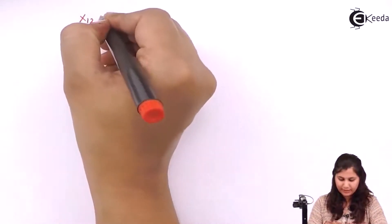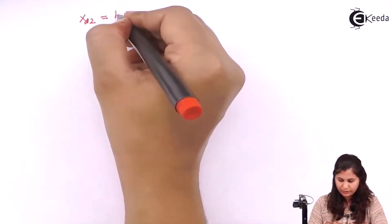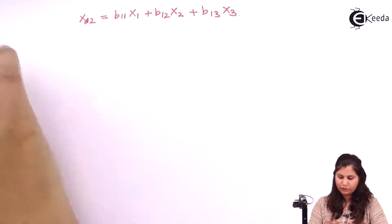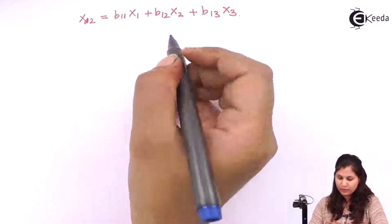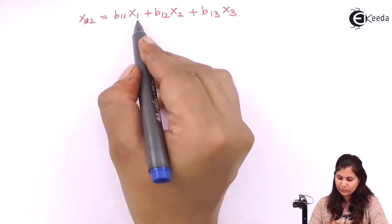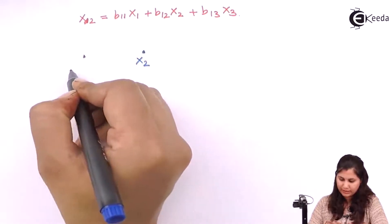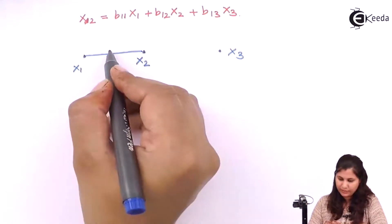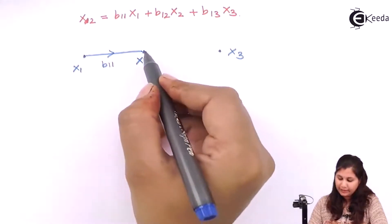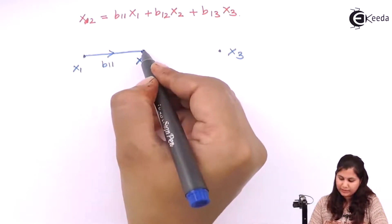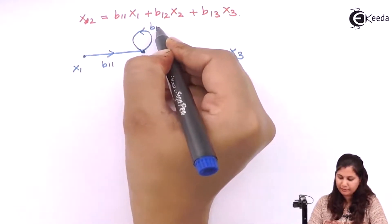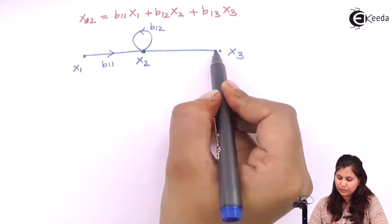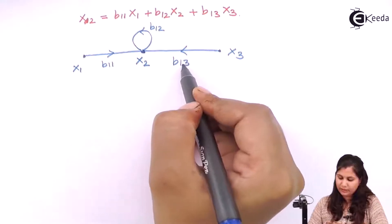Now consider the second equation: x2 equals b11*x1 plus b12*x2 plus b13*x3. In this equation x1, x2, and x3 are nodes. x1 is multiplied with b11, so we write b11 on the branch from x1 to x2. x2 has a self-feedback loop with transmittance b12. x3 is also an input to x2 with transmittance b13.